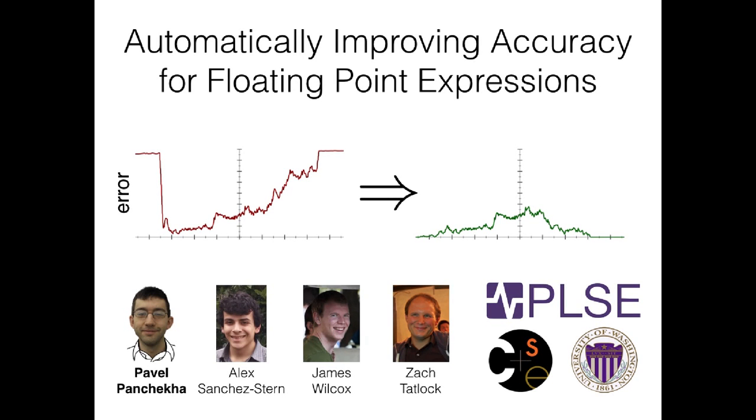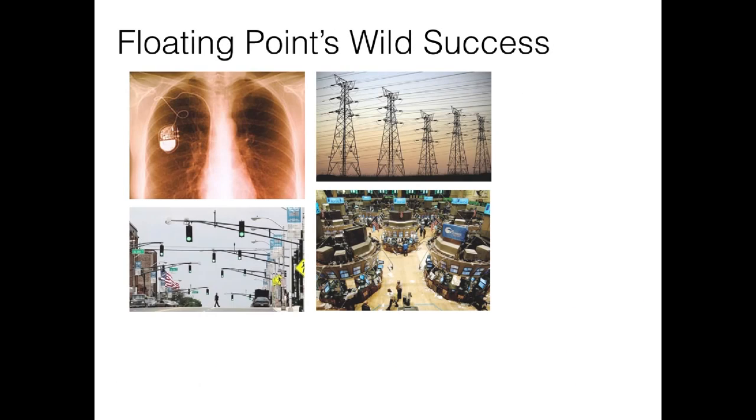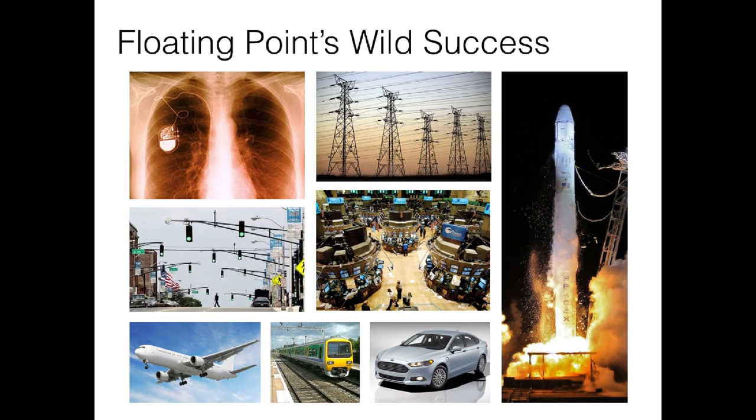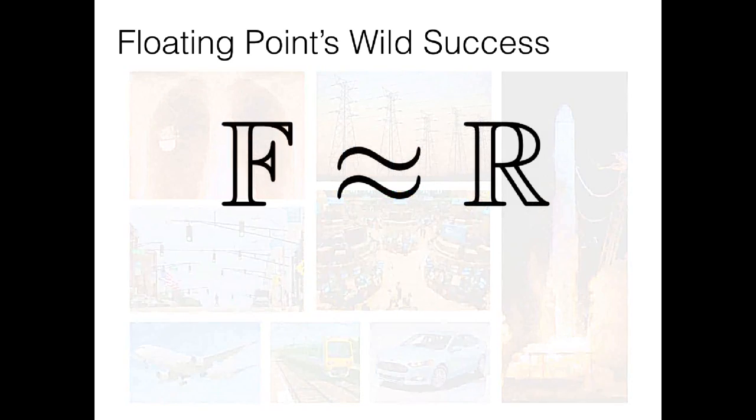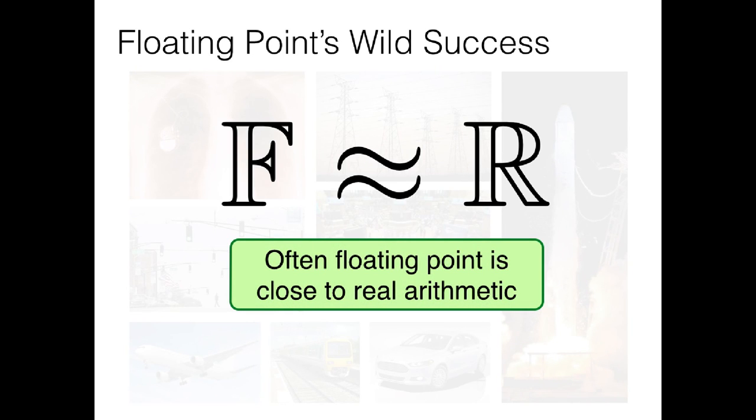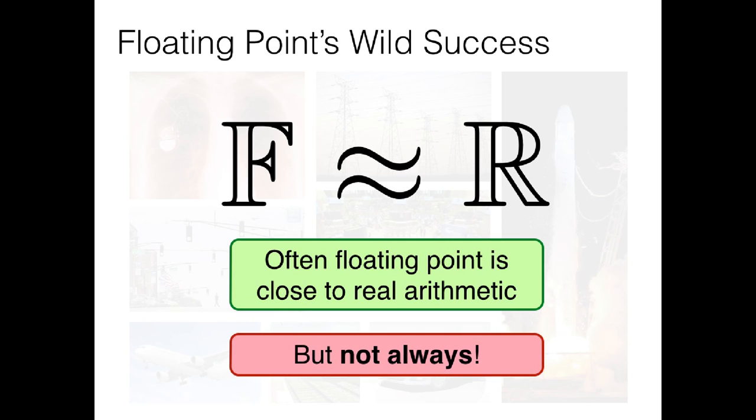Over the last 30 years, floating point has been incredibly important for scientific, engineering, really any sort of calculation where we need to do mathematics on a computer. The reason for this incredible success is that in a large number of situations, floating point arithmetic closely approximates arithmetic with the real numbers. But you can't fit the infinitely many reals into just 64 bits. So it's no surprise that floating point arithmetic and real arithmetic sometimes differ.